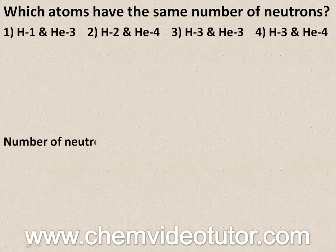The number of neutrons is equal to the mass number minus the atomic number. Alright, so which numbers are which?